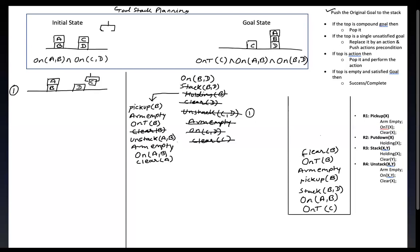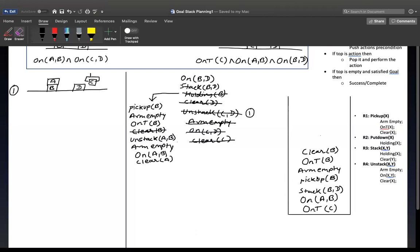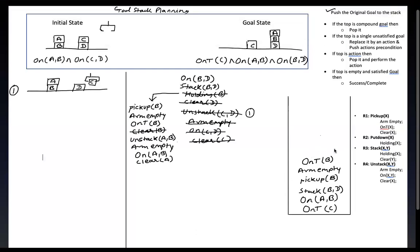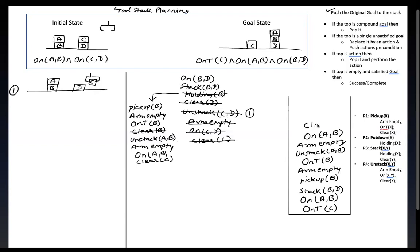We have to remove clear B from the stack because clear B is not satisfied. We replace it with the action unstack A comma B. The preconditions are: arm should be empty, A should be on top of B, and A should be clear.